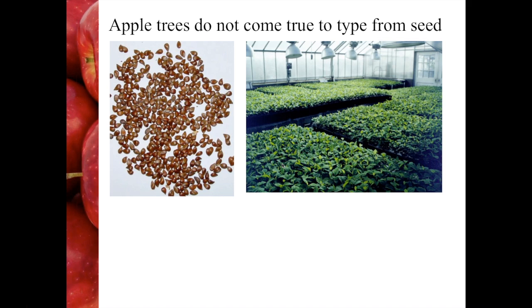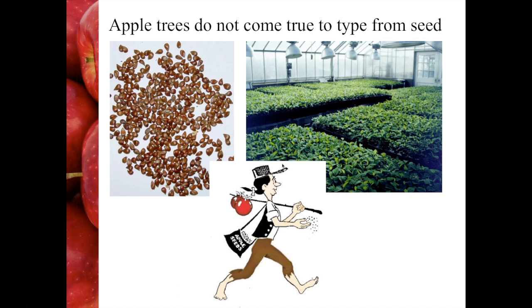Apple trees do not come true to type from seed. Many of us as kids have tried to grow an apple tree from a pip, but if you've ever had one of those trees actually come to fruit, it's often really disappointing — you do not get, for example, a Granny Smith tree from a pip from a Granny Smith apple. Johnny Appleseed did a great job spreading apple seeds around the US, but most of what resulted fed into hard cider production rather than dessert apples.